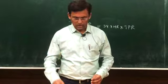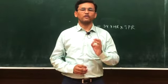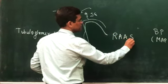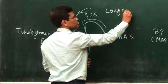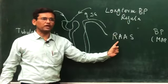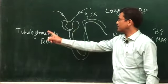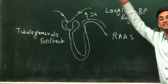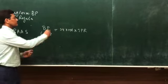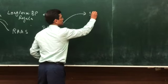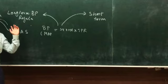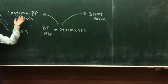The renin-angiotensin-aldosterone system is also the same mechanism as tubuloglomerular feedback. Long-term BP regulation means writing about the renin-angiotensin-aldosterone system; similarly, tubuloglomerular feedback involves the same answer. The short-term mechanism works within seconds, while the long-term mechanism works over days and weeks and is the renin-angiotensin-aldosterone system.